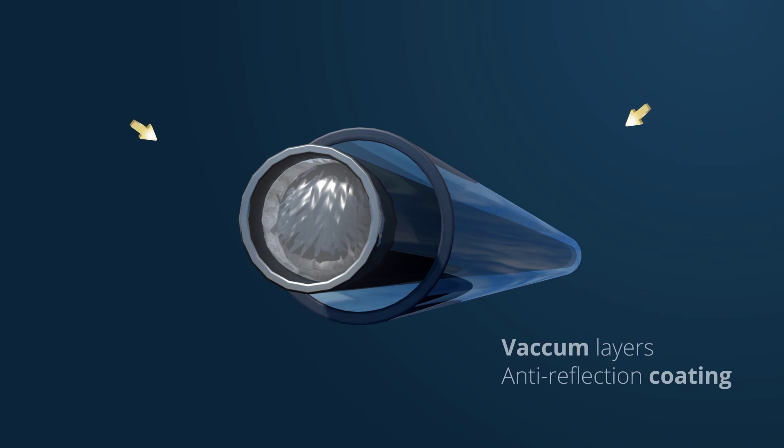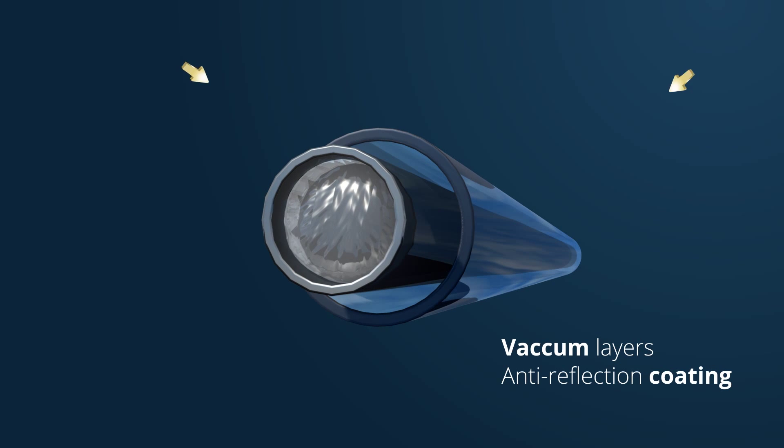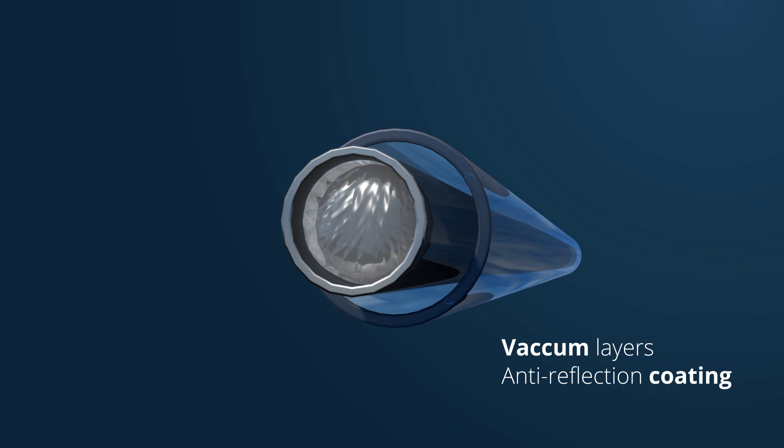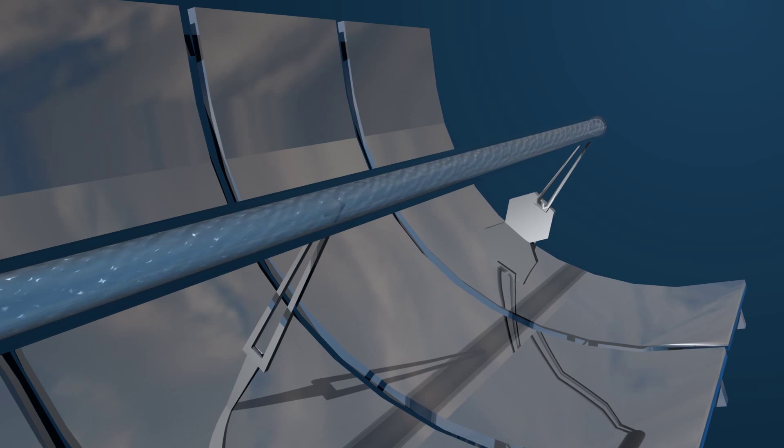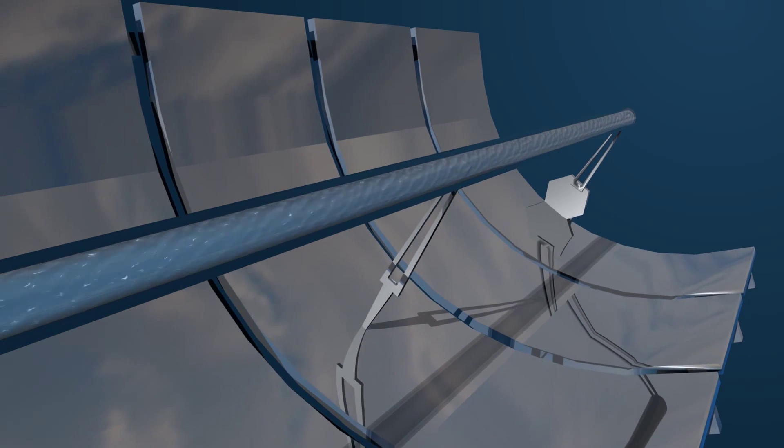When the reflected sunlight focuses onto the heat collecting tubes, it passes through the vacuum layers and into the anti-reflection coating of the tubes, heating up the water inside while the vacuum layers prevent heat loss.